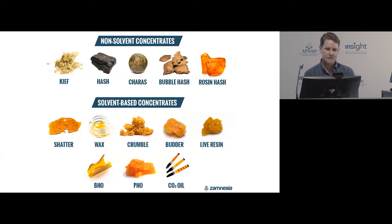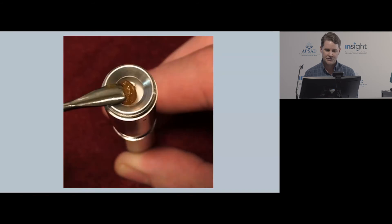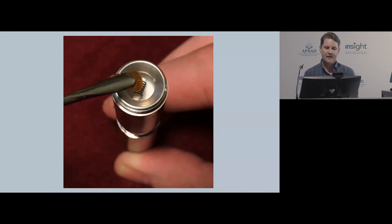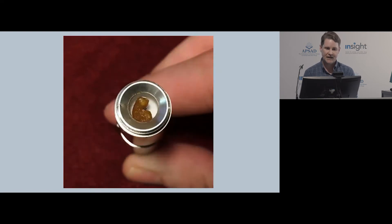There are also dry herb vaporisers designed for cannabis concentrates and extracts — things like wax, shatter, and oils. These are not super common in Australia; we see them much more in countries with a legal cannabis market, particularly the United States. There are particular devices designed specifically to vaporise these extracts. A dab of wax placed directly onto the heating element is vaporised just below combustion, delivering quite a high dose of THC because it is a concentrated extract.